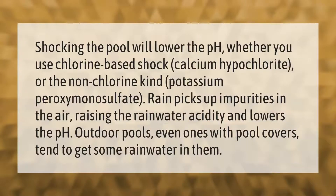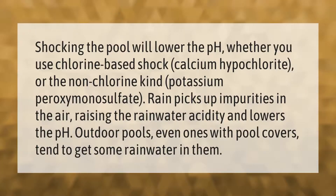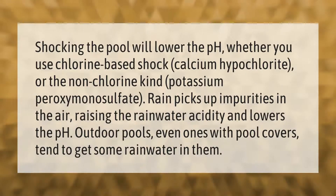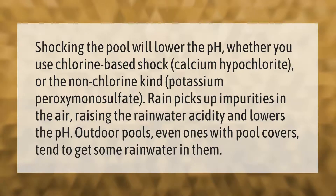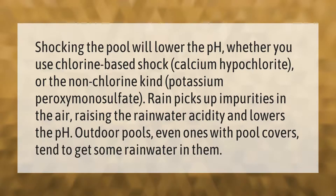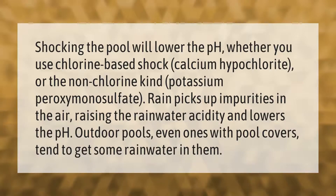Shocking the pool will lower the pH, whether you use chlorine-based shock like calcium hypochlorite, or the non-chlorine kind, potassium peroxymonosulfate. Rain picks up impurities in the air, raising the rainwater's acidity and lowering the pH. Outdoor pools, even ones with pool covers, tend to get some rainwater in them.